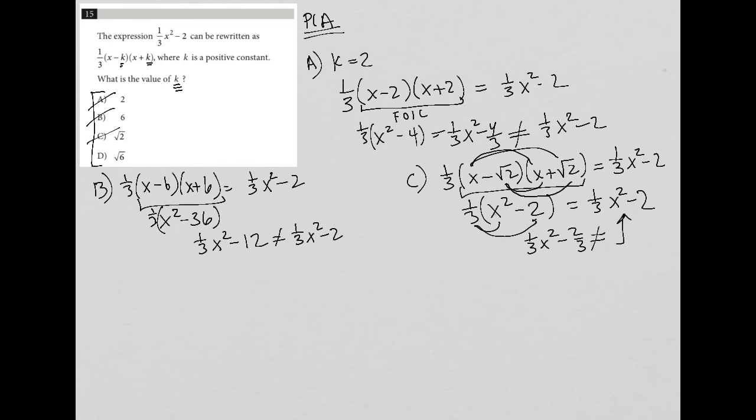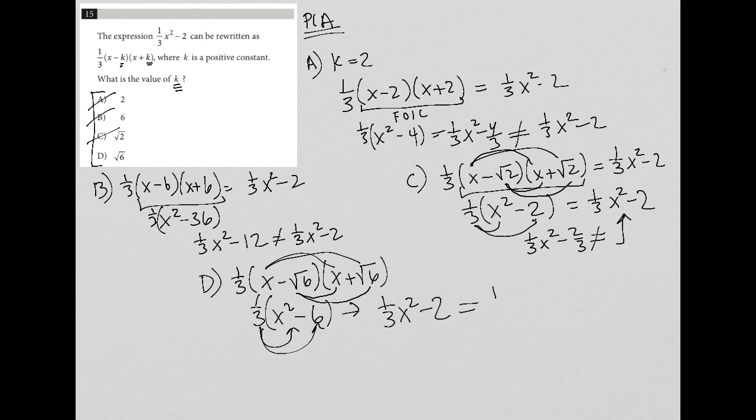So D better be the correct answer, but let's just check it to make sure. I'd have 1/3(x - √6)(x + √6), and that is x times x is x². x times positive √6 cancels out with x times negative √6, but negative √6 times positive √6 is minus 6. We have the 1/3 out in front, which means that becomes 1/3 x² when we distribute the 1/3, minus 2, and that is equal to the original expression that we wanted it to be equal to, right up here. So that is correct. So D is the correct answer.